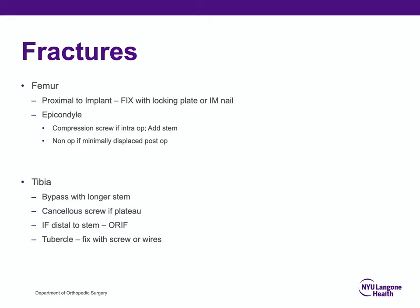A femur fracture proximal to the implant can be fixed with either an IM nail or a locking plate. Fractures of the epicondyle that occur during surgery, most common during a PS knee where a box is being cut, can typically be fixed with a compression screw intraoperatively, and you should add a stem to support it. An epicondyle fracture seen postoperatively that's minimally or non-displaced can typically be treated non-operatively with restricted weight bearing. On the tibia side, bypass any fractures with a longer stem, and fractures distal to the stem are treated with ORIF.